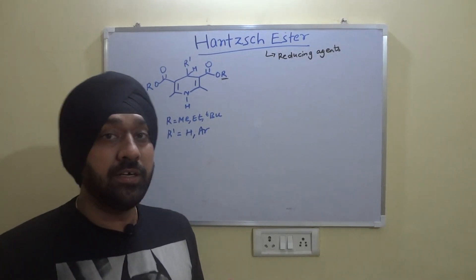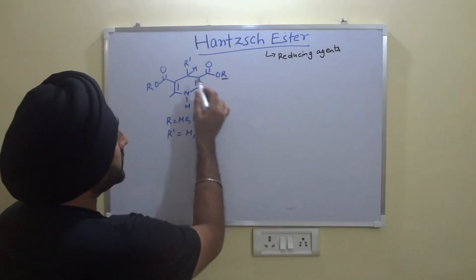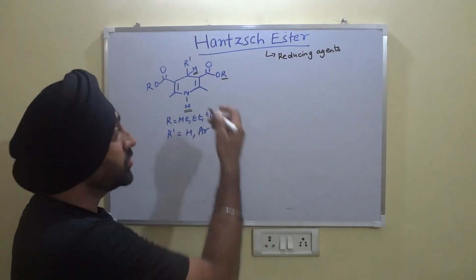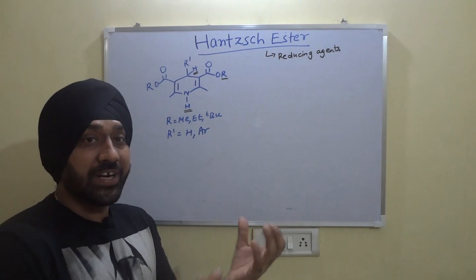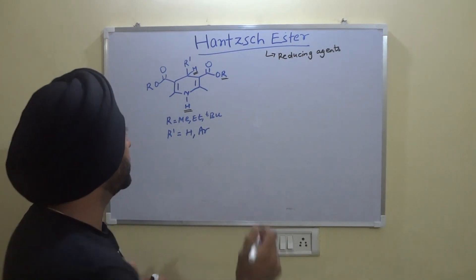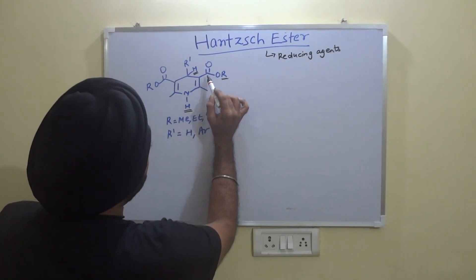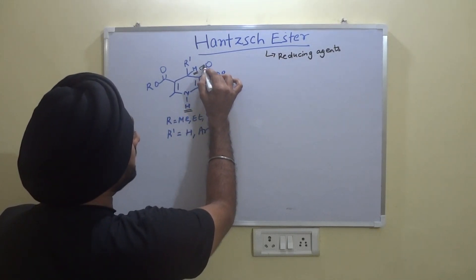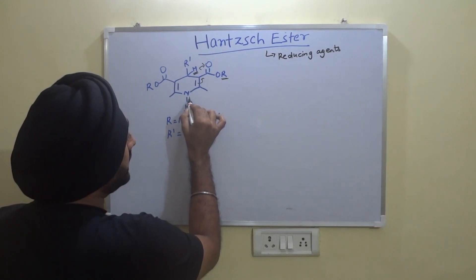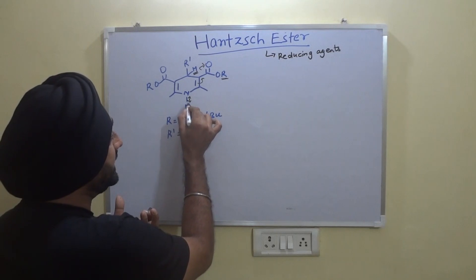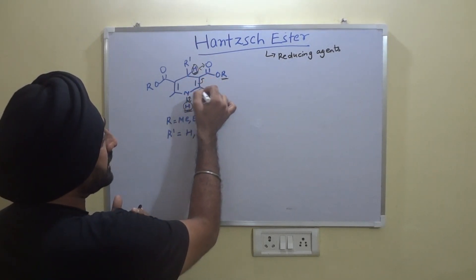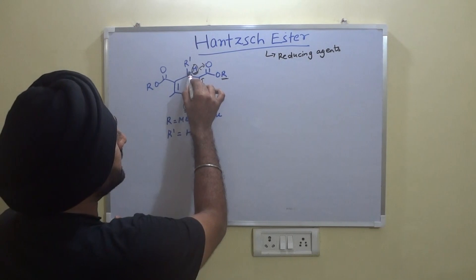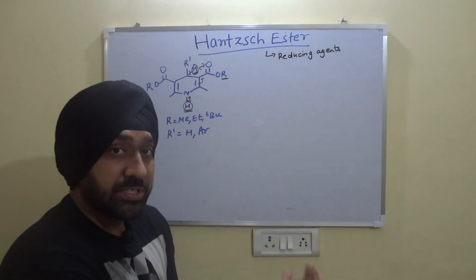If we carefully look at this structure, we can clearly imagine how this must be acting as a reducing agent. In the structure of these Hantzsch esters, we have these two hydrogens which are released and added onto the substrates getting reduced. The electron-withdrawing ester groups are in conjugation with this double bond, making the N-H bond weaker, which also makes the C-H bond weaker, so hydrogens are released in the process.